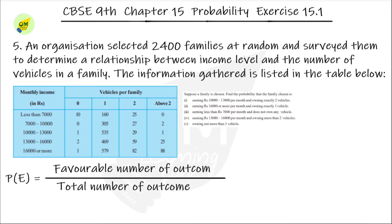Looking at the income range 10,000 to 13,000 and the column for two vehicles, we find 29 families. So the answer for the first subdivision is 29 divided by 2400.